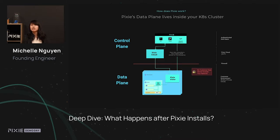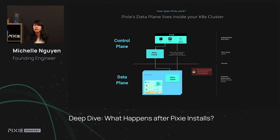So now that Pixie is running inside your cluster, how does it actually work? We split up our services in Pixie into two different planes: the control plane and the data plane. The control plane is responsible for handling orchestration and requests that occur when you make a request through the CLI, the UI, or the API. The data plane handles all data-related operations — essentially collecting data or executing queries on that data — and all of this lives entirely within your Kubernetes cluster.